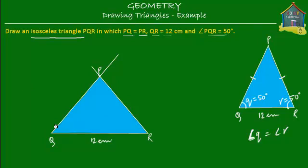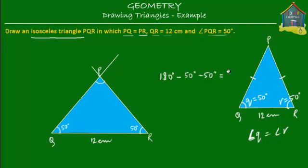This angle is equal to 50 degrees and this angle is also 50 degrees. What should this angle at P be equal to? The sum of all angles of a triangle is 180 degrees. So if this is 50 and this is 50, then angle P will be 180 minus 50 minus 50. 180 minus 50 is 130, and 130 minus 50 is 80. So this angle is equal to 80 degrees.